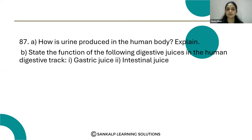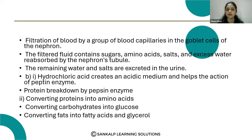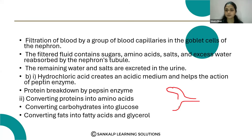Let's see the answer for the first question. Filtration of blood by a group of blood capillaries in the goblet cells of the nephron takes place in the glomerulus. Just imagine this is the Bowman's capsule and the blood vessels — the filtration of the blood takes place here. That is called the glomerulus.